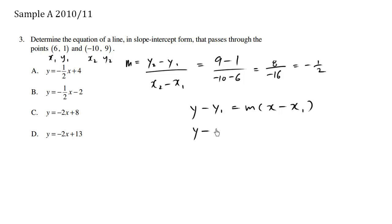We have y minus y1. We're going to use this one here which is 1 equals m which is negative 1 half times x minus 6. And here is our equation. I don't see it here in this form so I'm just going to expand it out and simplify.